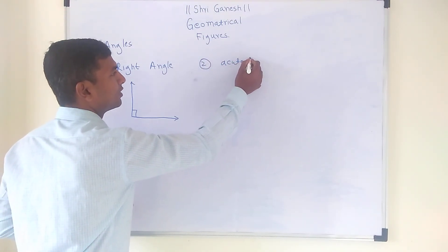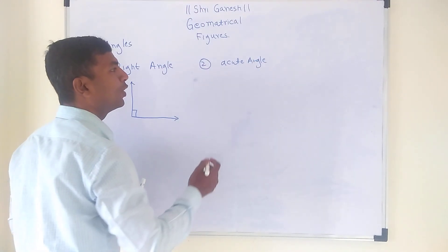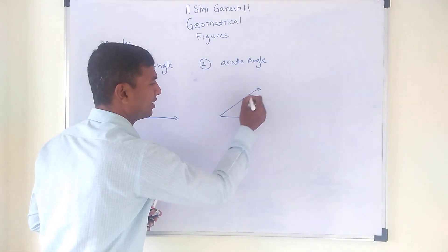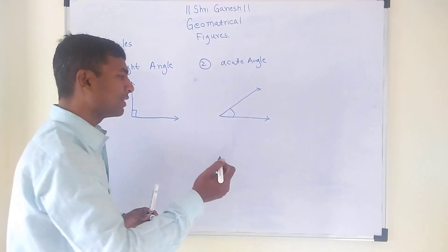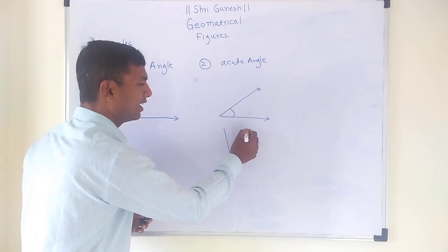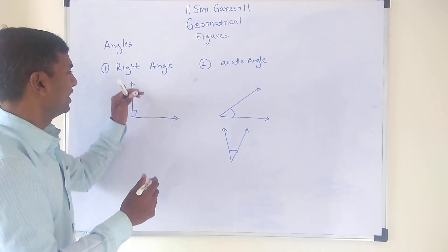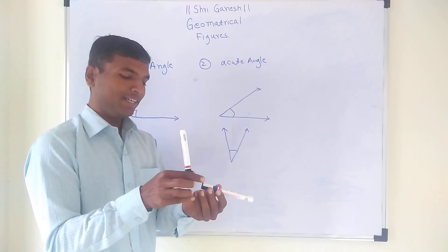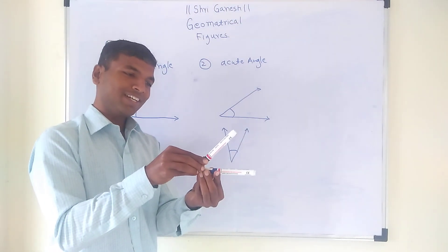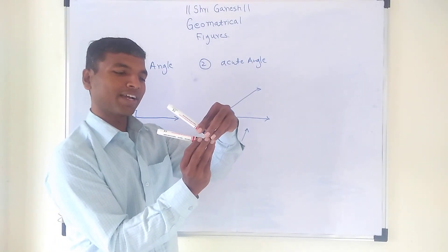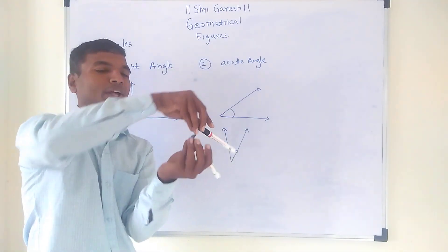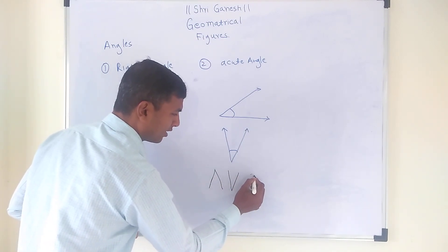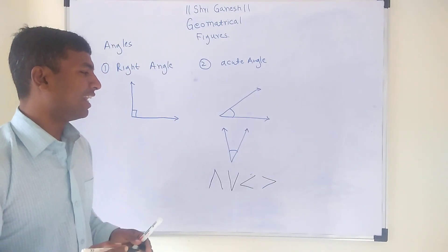The second type is the acute angle. The acute angle is less than 90 degrees. So if we reduce the right angle, we get something like this — this is an acute angle. Any angle less than 90 degrees is called an acute angle. You can see different figures like this — all of these are acute angles because they are less than 90 degrees.